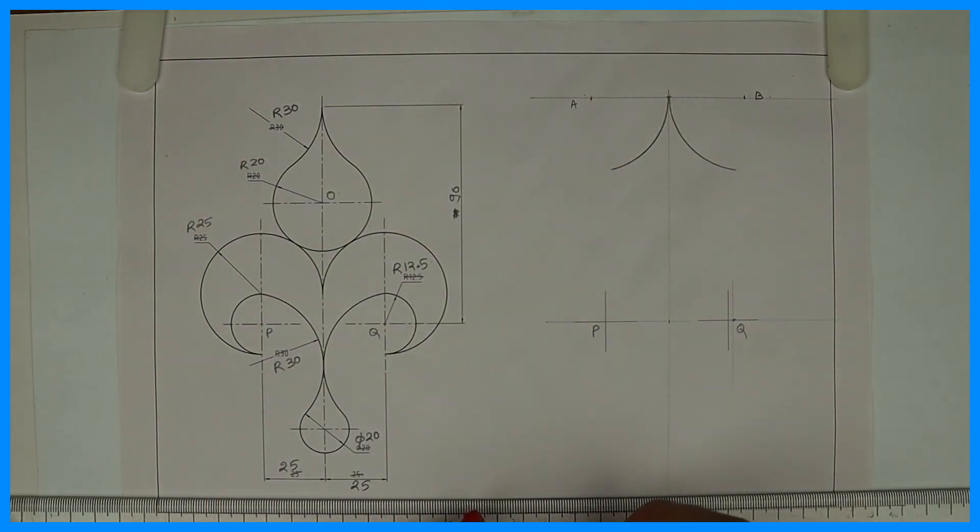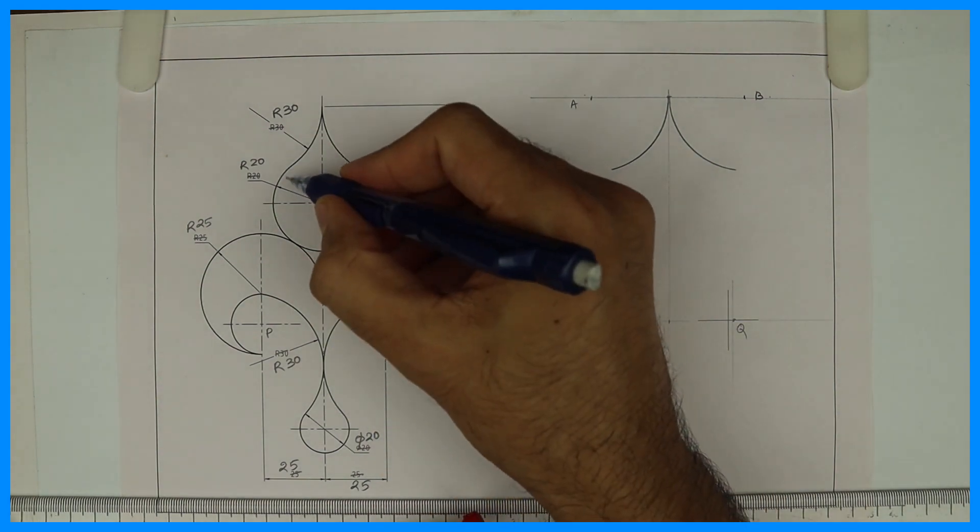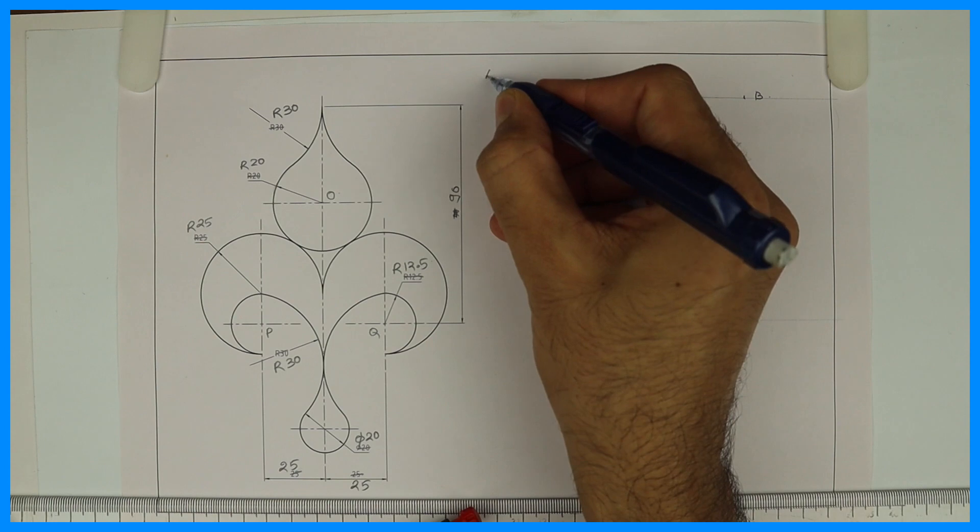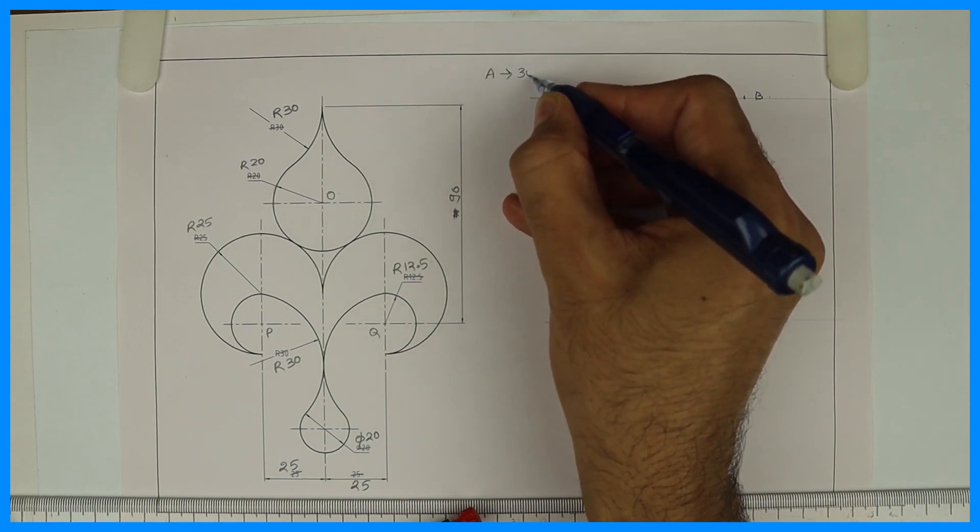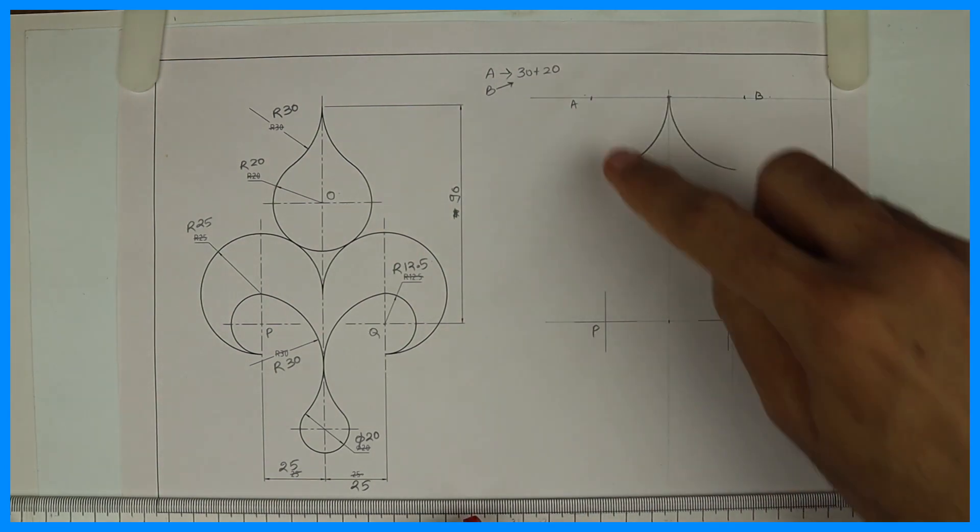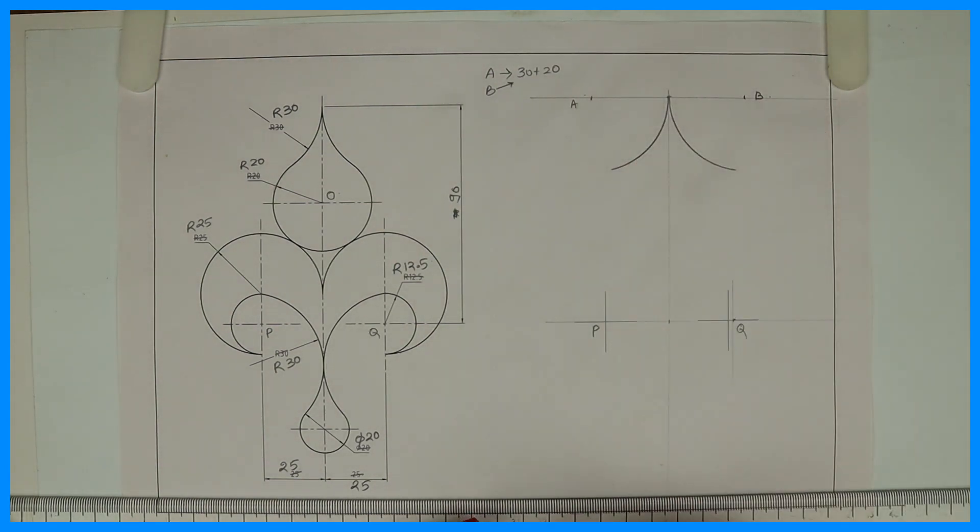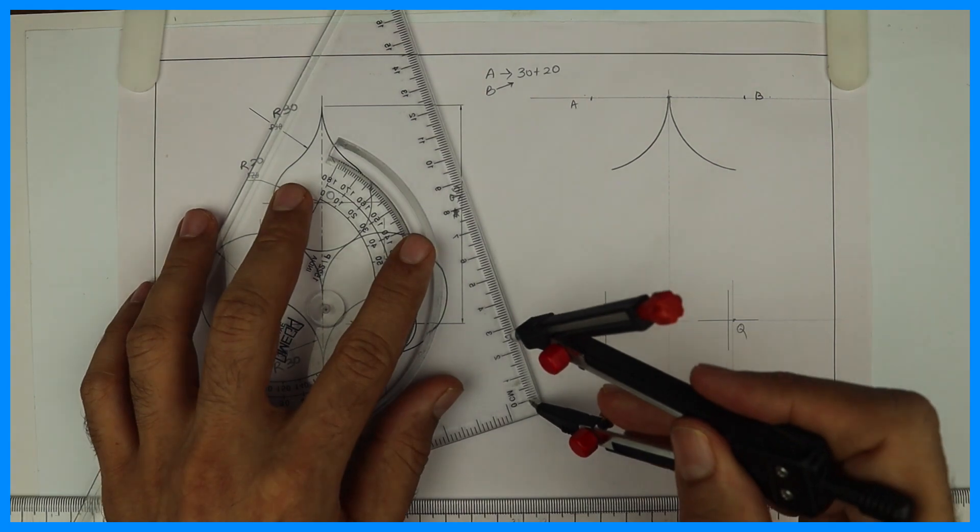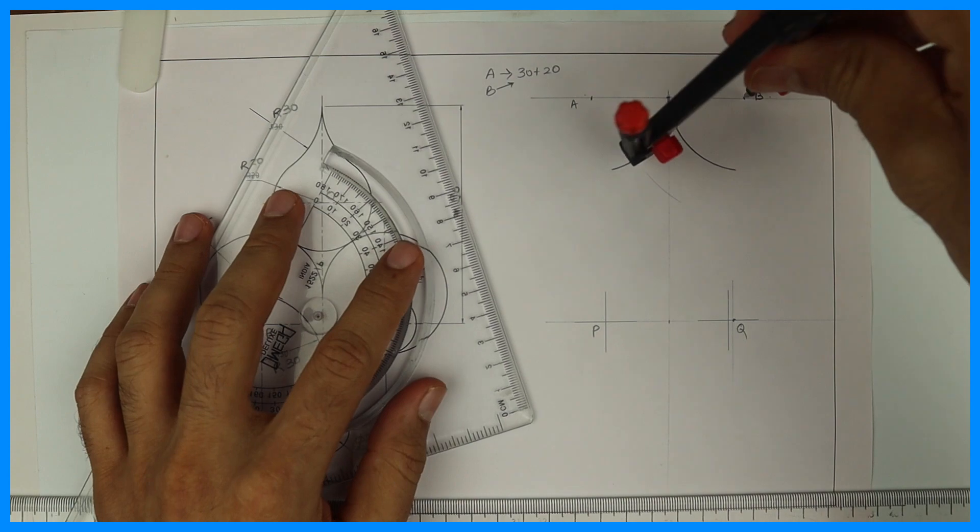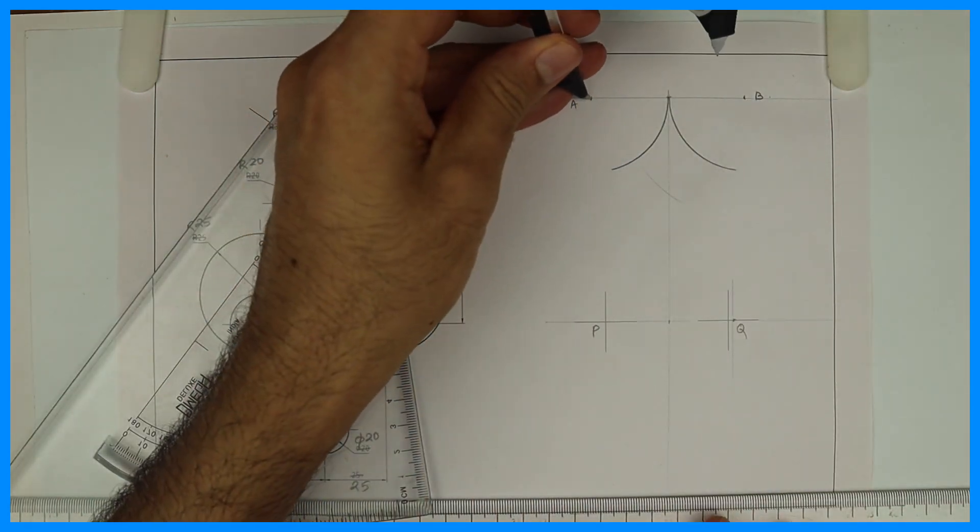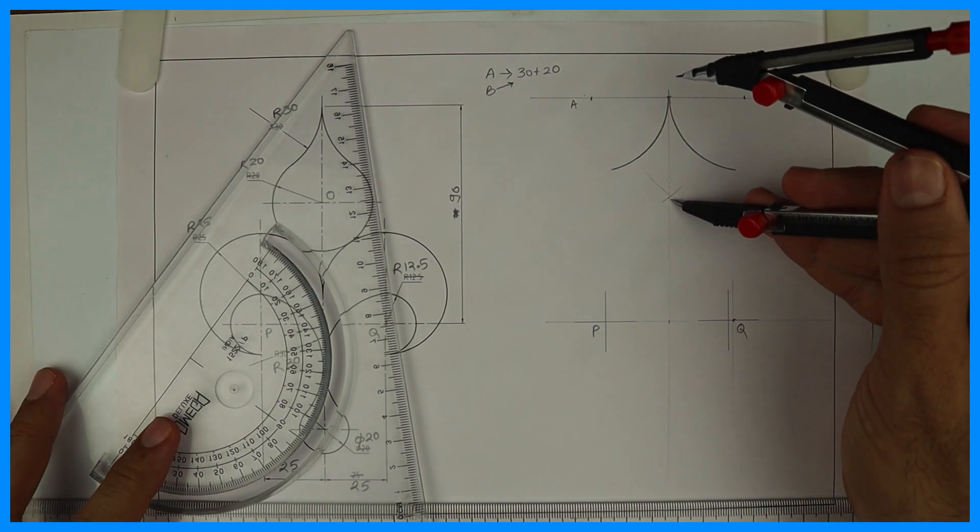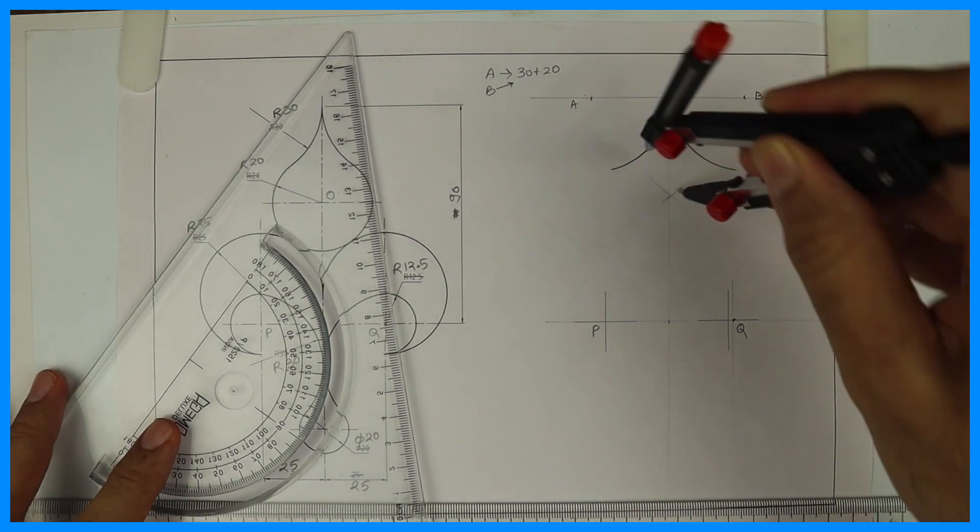Then we need to draw radius 20 which is external to this radius 30. So from A we need to cut 30 plus 20 because it is external, we need to add. Same with B also, 30 plus 20. So I will take 50 in my compass and from B I will cut 50, from A I will cut 50. Wherever it intersects, from that point I will draw radius 20.